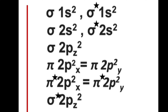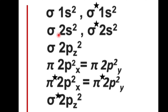Here you can see a table which shows the filling of molecular orbitals based on energy level. After filling the sigma 1s orbital, electrons enter into the sigma star 1s antibonding molecular orbital, then into sigma 2s and sigma star 2s.